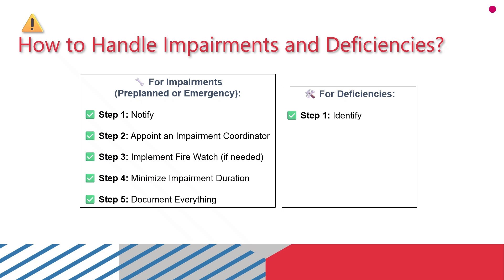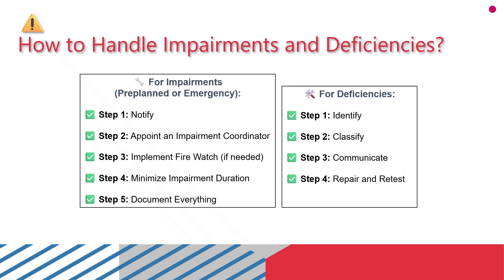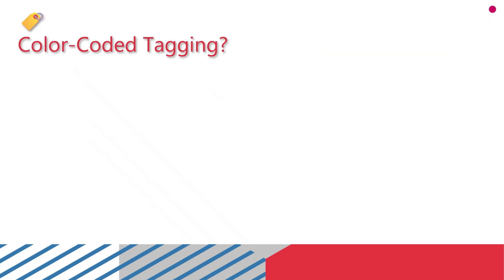For deficiencies — whether critical or non-critical — follow these steps. Step one: identify all deficiencies during inspection or testing and note them down. Step two: classify as critical or non-critical. Step three: communicate — share findings with the property owner and recommend timelines for fixing issues. Step four: repair and retest — critical issues must be repaired first; retest if required. Step five: keep records — maintain reports for accountability and compliance.